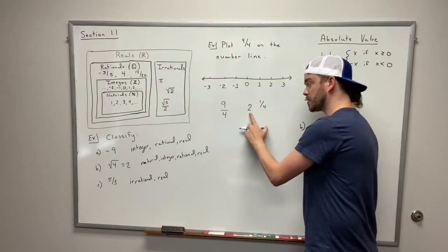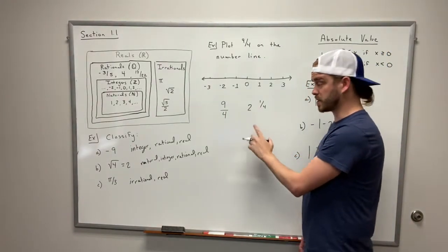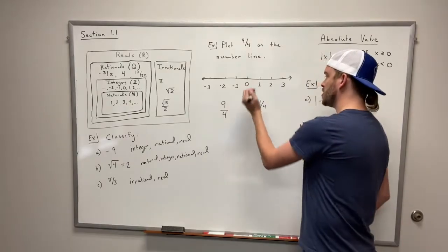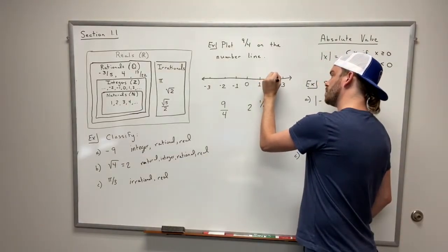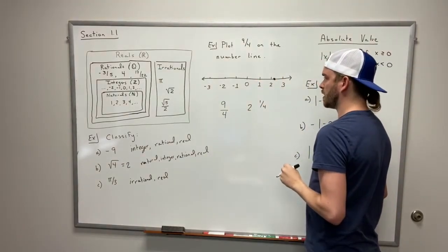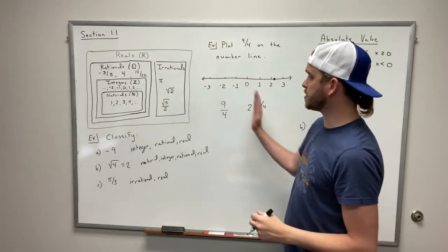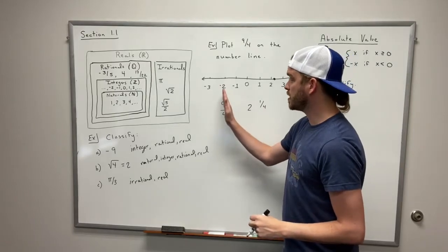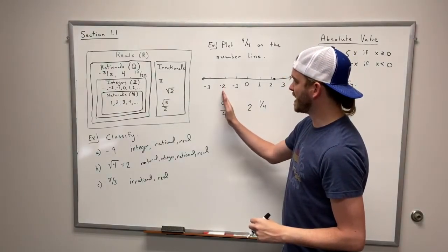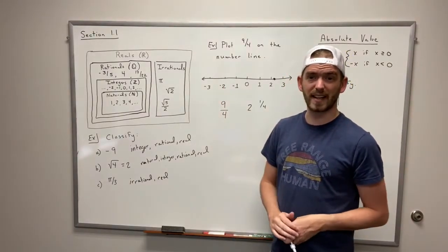And so we know that it's going to be in between 2 and 3 because of this because you've got 2 and some change. So we're going to do 2 and we're going to plot our dot right there. And that's how we plot fractions. And this also works on the negative side. You just have to remember to put it between negative 2 and negative 3 if it was something like negative 9 fourths.